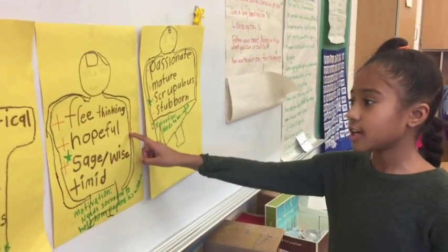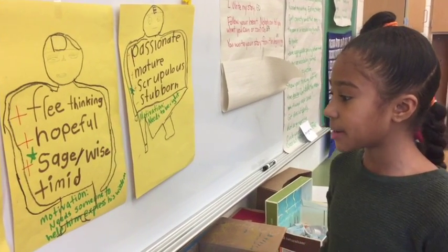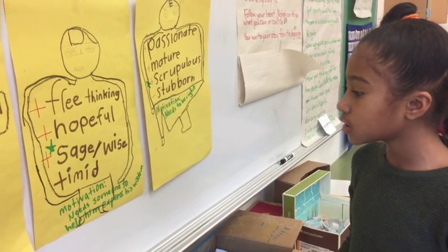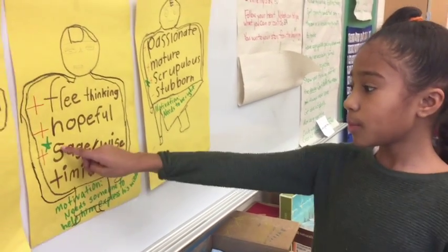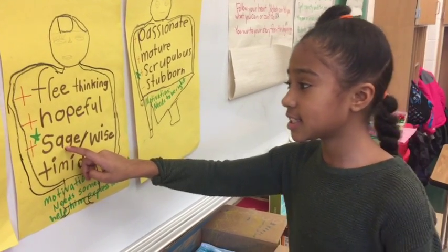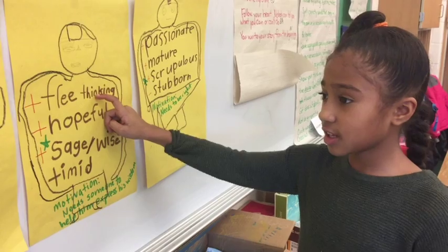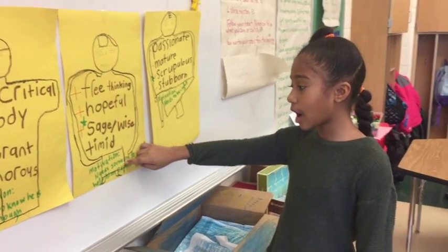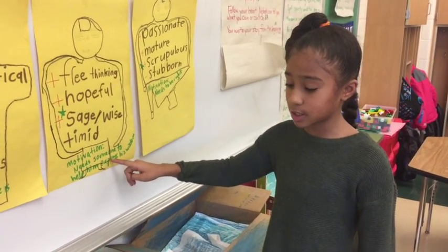This is Character D and his character traits are free-thinking, hopeful, sage and timid. His motivation is need someone to help him express his wisdom. We put a star next to his dominant trait which is sage. He is free-thinking and thinks very differently, so that's why we got his motivation of needing someone to help him express his wisdom.